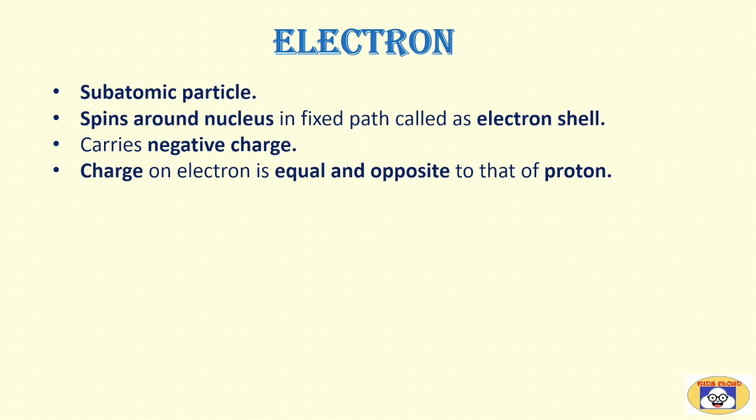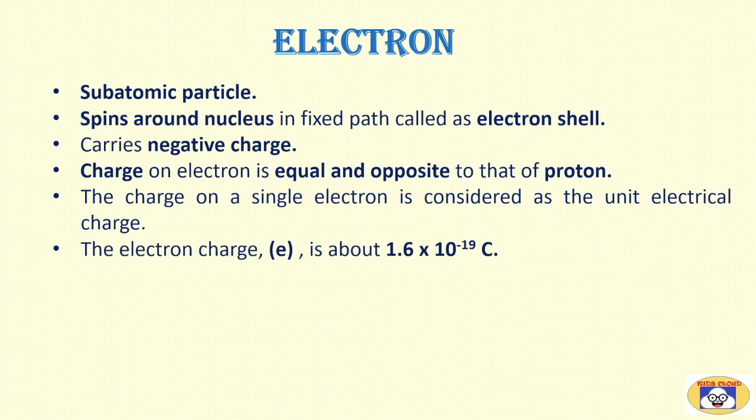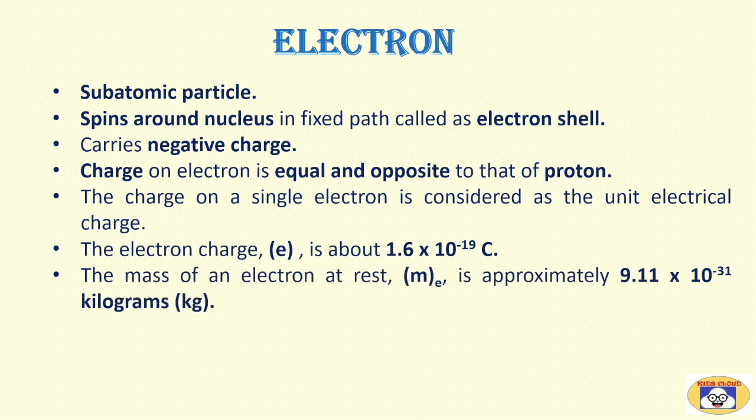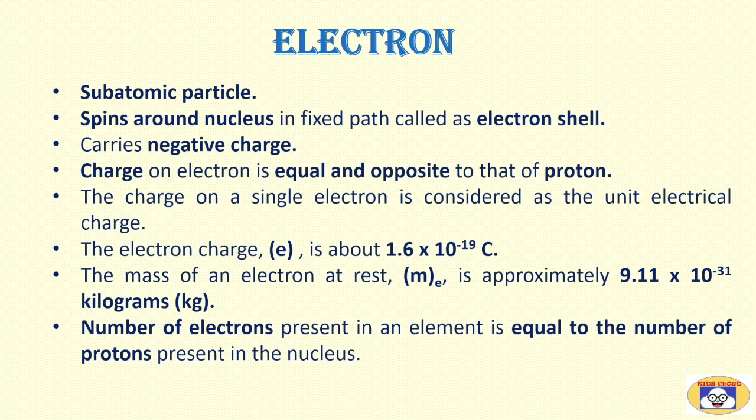Electron. Like protons and neutrons, electron is also a subatomic particle. It spins around the nucleus in fixed path called as electron shell. Electron carries negative charge. Charge on electron is equal and opposite to that of proton. The charge on a single electron is considered as the unique electrical charge. The electron charge symbolized by E is about 1.6 into 10 to the power minus 19 coulomb. The mass of an electron at rest symbolized by Me is approximately 9.11 into 10 to the power minus 31 kilogram. Total number of electrons present in an element is equal to the number of protons present in the nucleus.